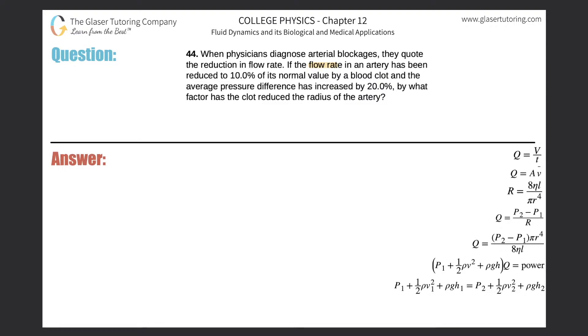If the flow rate in an artery has been reduced to 10% of its normal value by a blood clot, and the average pressure difference has increased by 20%, by what factor has the clot reduced the radius of the artery?